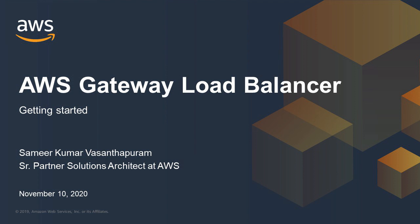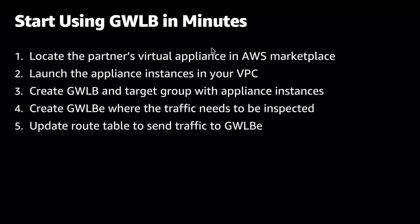In this demo, I'm going to show you how you can start using Gateway Load Balancer in minutes. We'll do this in five steps, the first one being locating a partner's virtual appliance in the AWS marketplace and deploying it into a VPC wherein all of your appliances live. We're going to simulate a security-based use case, so I'm going to call this particular VPC the security VPC.